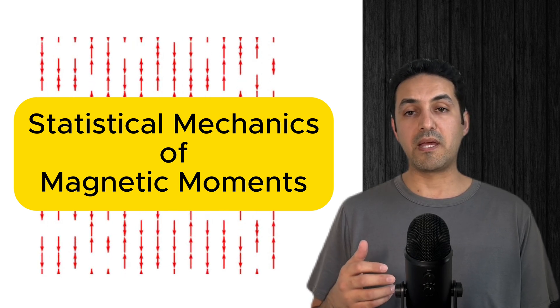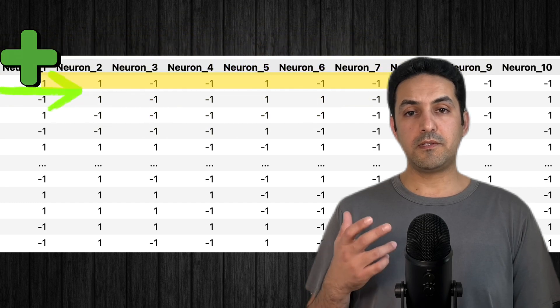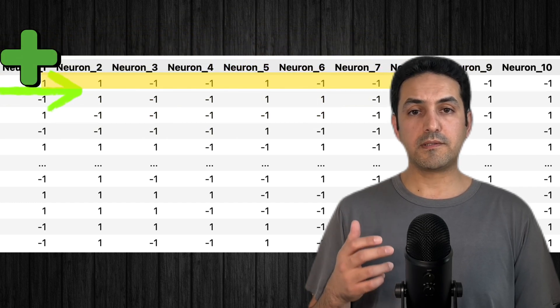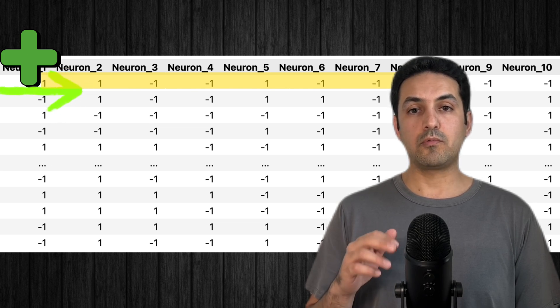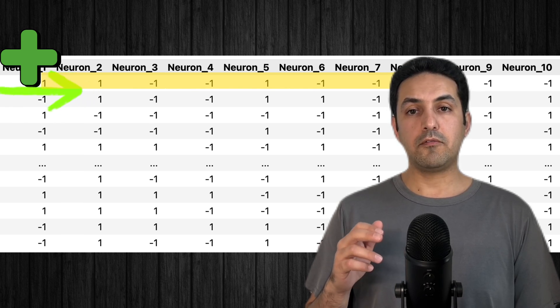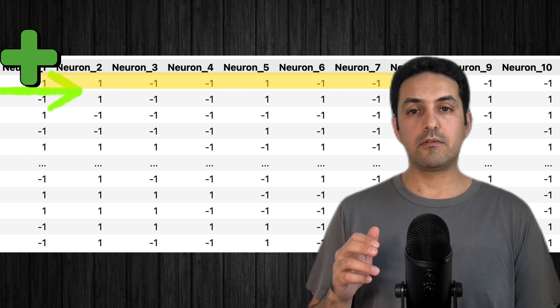And one good indicator for the degree of alignment between neurons is inspired by statistical mechanics of magnetic moments in physics, and is called magnetization. It is simply defined as the sum of all the cells in one row of the spreadsheet. Since the states of neurons are shown with minus one and one, if neurons have fired randomly, we should see the sum to be zero in most of the rows.